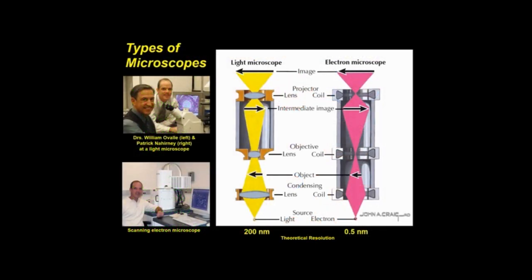Histology relies on the magnifying and resolving power of a microscope. Two major types are light and electron microscopes, which have different lenses and sources of illumination. A conventional light microscope uses brightfield illumination, or photons, and has a resolving power of about 200 nanometers, whereas the electron microscope can resolve up to 0.5 nanometers.